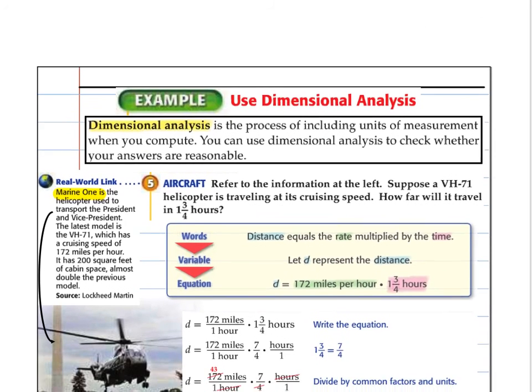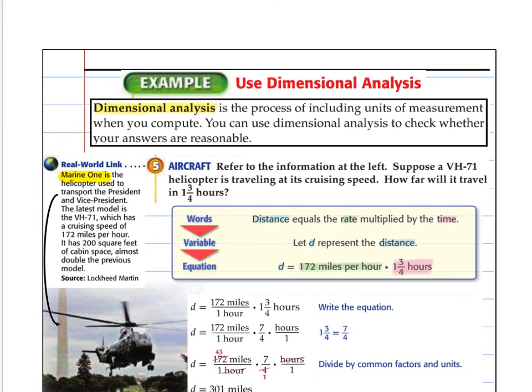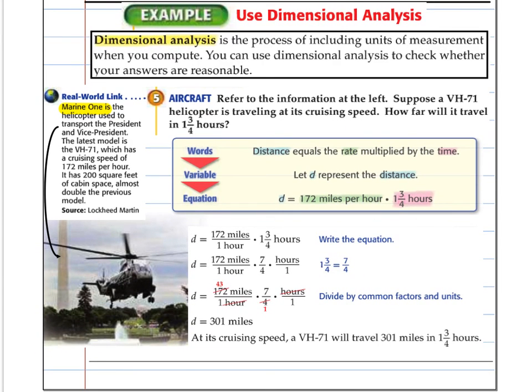Alright, last thing. So dimensional analysis is the process of including units of measurement when you compute. So we use this to check our answers and make sure our answers are reasonable. We won't want to be looking for minutes and we end up with miles. So on and so forth. So we use the information on the left that Marine One's helicopter is used to transport the president and vice president. VH71 has a cruising speed of 172 miles per hour. It has 200 square feet of cabin space, almost double the previous.